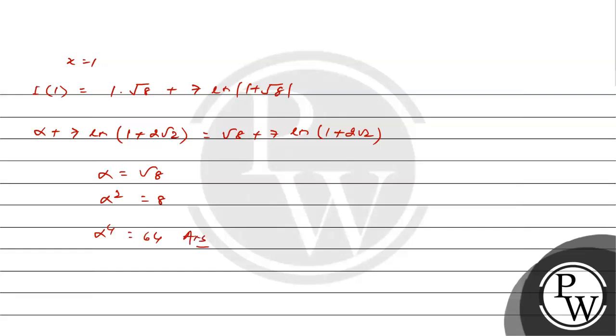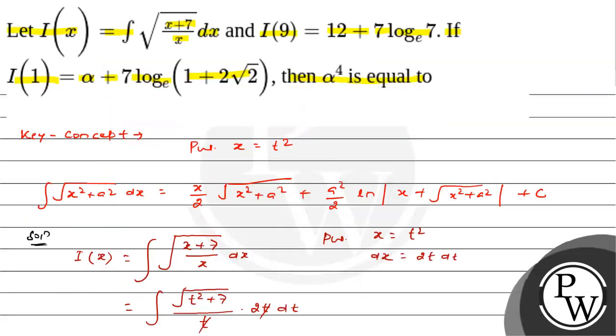Therefore α⁴ equals 64. This is the required answer of the given question, and the value of α to the power 4 is 64. Hope you understood it well. Best of luck!